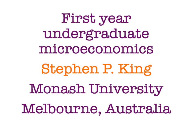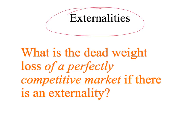Hi and welcome back to first year undergraduate microeconomics. We've been discussing externalities and we've found that when there's a positive externality, the amount of production in a perfectly competitive market is less than the socially optimal level. And when there's a negative externality, the amount of production in the perfectly competitive market is greater than the socially optimal level. Because the market outcome is different to the socially optimal level, we must have a deadweight loss at the market outcome. So in this presentation we're going to ask: what is the deadweight loss of a perfectly competitive market when we have an externality?